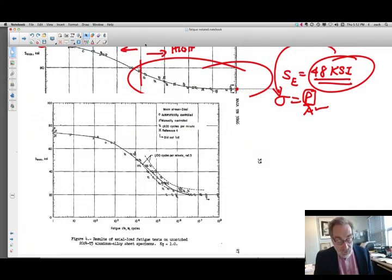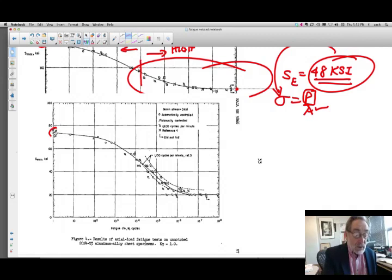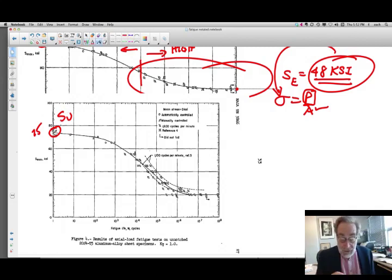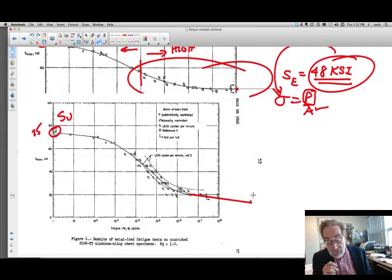Now this one's aluminum. And you see we're starting out here at a much lower stress, maybe 75 ksi. And that will be the ultimate strength of this material. But for aluminum, it turns out that we are more inclined to say that it actually just doesn't have a plateau and it keeps on going down.